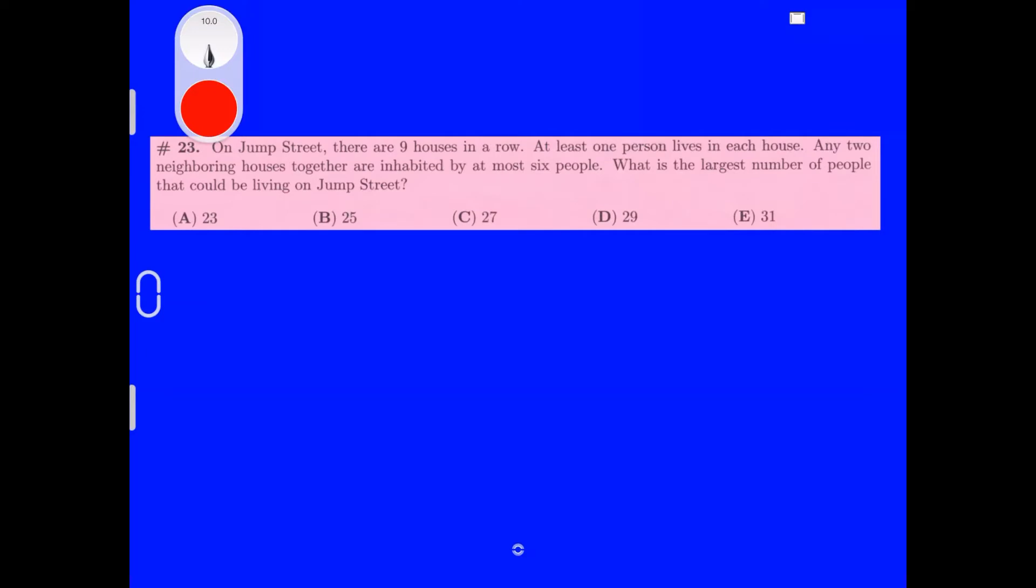On Jump Street, there are 9 houses in a row. At least 1 person lives in each house. Any 2 neighboring houses together are inhabited by at most 6 people. What is the largest number of people that could be living on Jump Street? If it's just 9 houses, we can separate the 6 because they said any 2 houses that are neighboring can have a total of 6 people. We can have 3 people per house, and that would get you 27, because it would be 3 times 9, which is the amount of houses. That is answer C, but we have to see if we can get any higher.